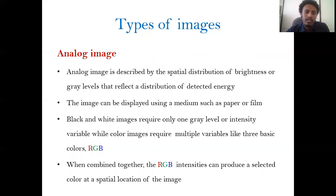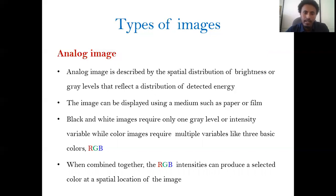In an analog image, the spatial distribution of brightness — or gray level values — is continuous throughout the spatial coordinates x and y. These kinds of images can be displayed using paper or film. We have two kinds of analog images: black and white as well as colored. The basic concept behind analog image is that the brightness values are continuous throughout the spatial coordinates.